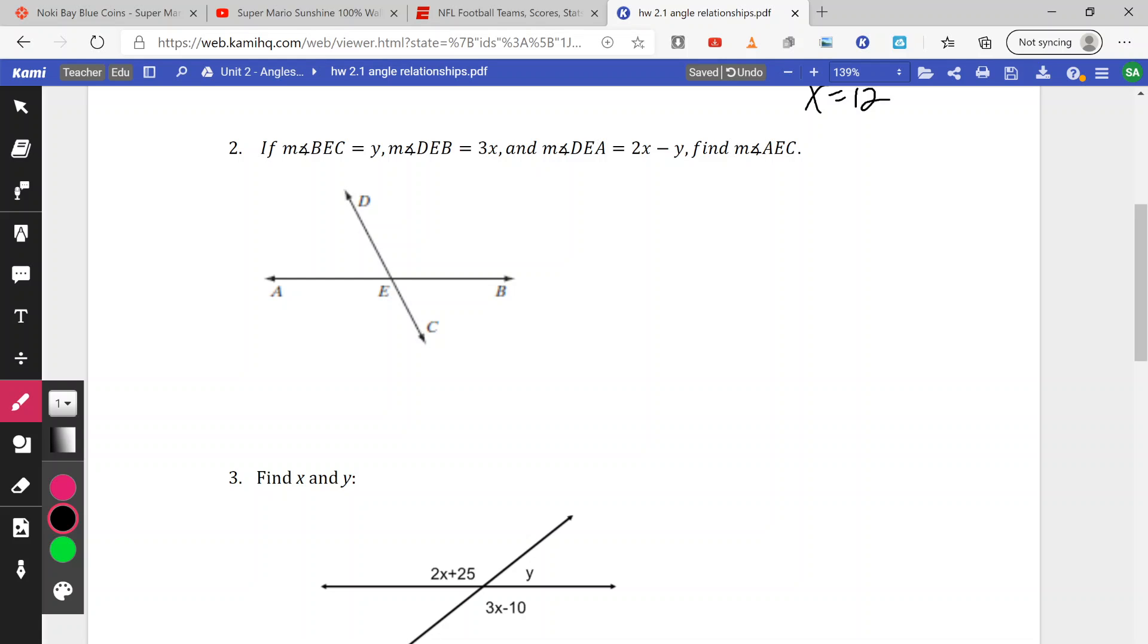Number two, we are told angle BEC, so from B to E to C, we are told that is y degrees. We are told angle DEB, from D to E to B, that is 3x.